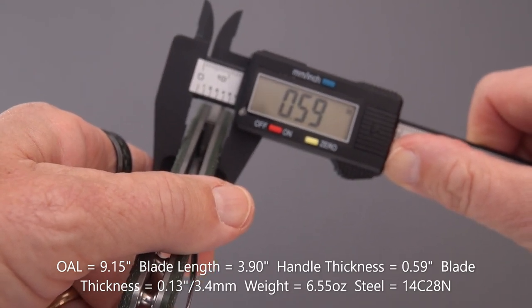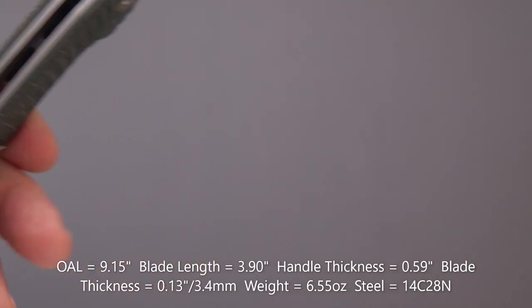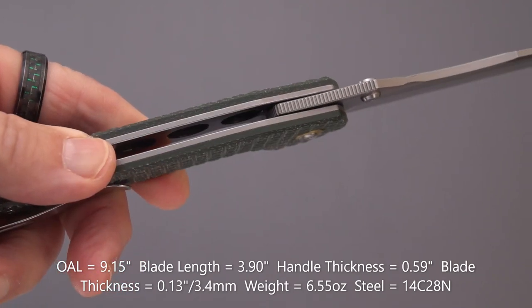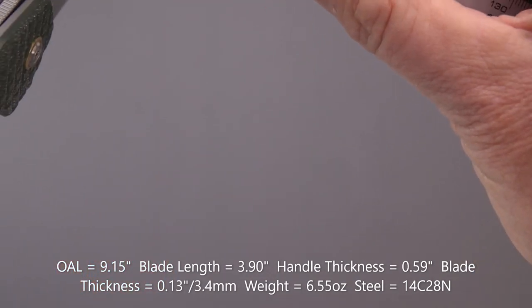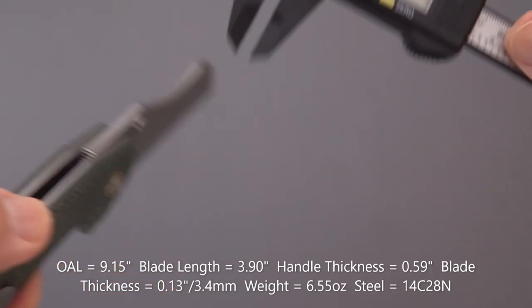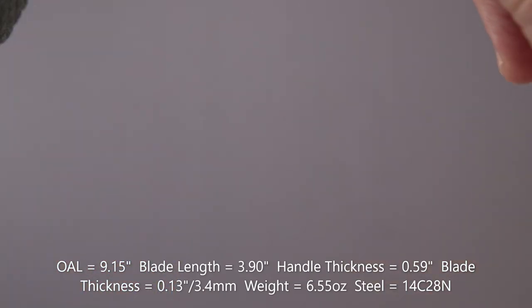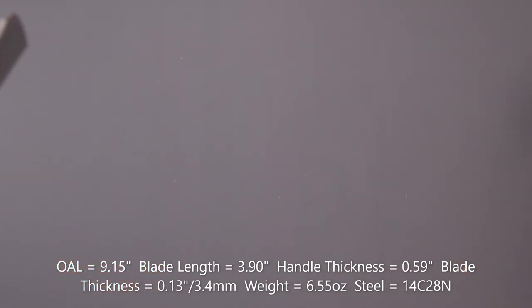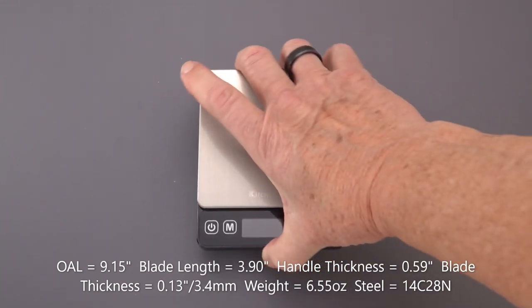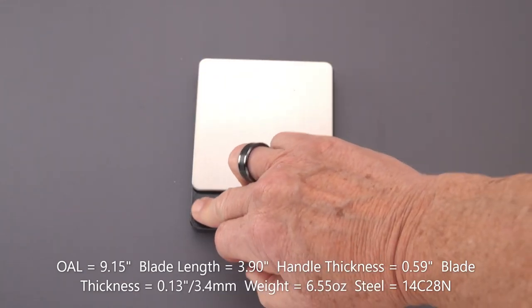Moving to the thicknesses: nice thin handle for a knife this size. I mean, 0.59 seems like a lot, but in proportion to the rest of the knife, it is really not bad. Got a blade thickness of 0.13, which in millimeters is 3.4.